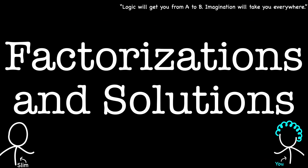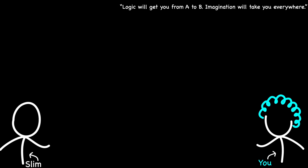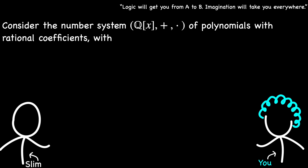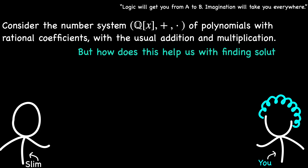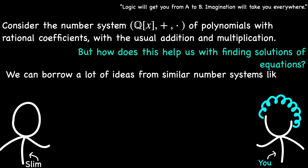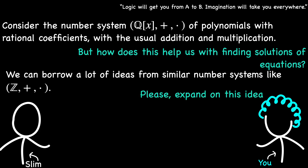So we've established that we can think of polynomials as elements within a new kind of number system with its own rules for addition and multiplication. How does this help us with our original problem of finding solutions to polynomial equations? Well, this idea opens up a whole new way of thinking about equations. In particular, there is a deep connection between finding solutions and factoring polynomials.